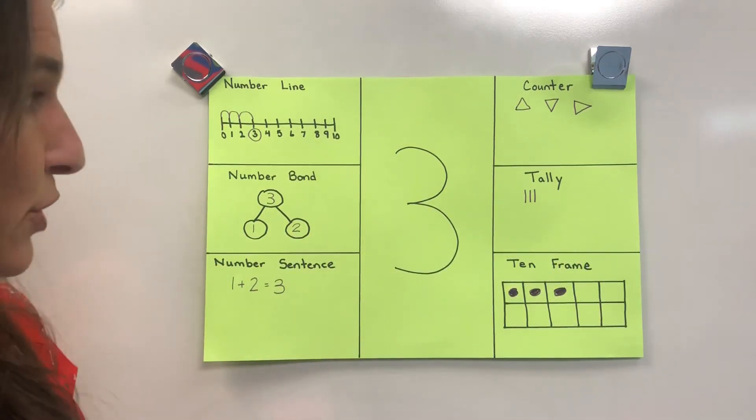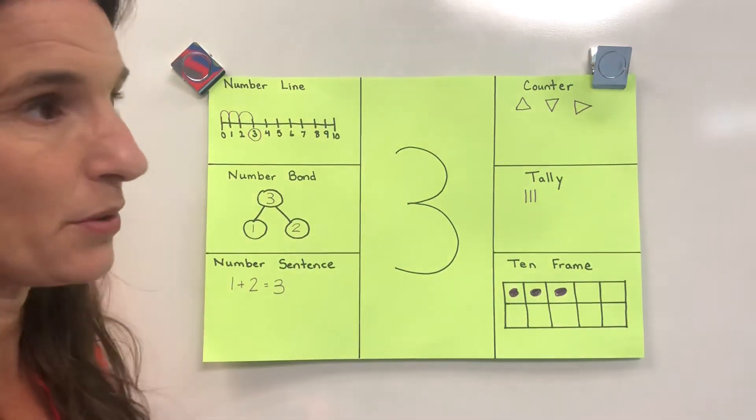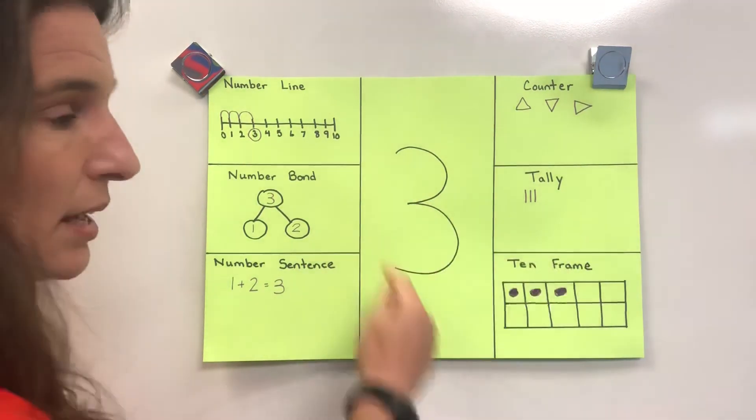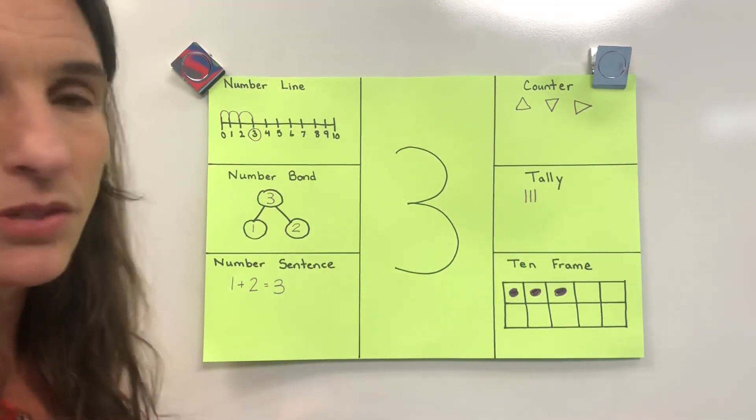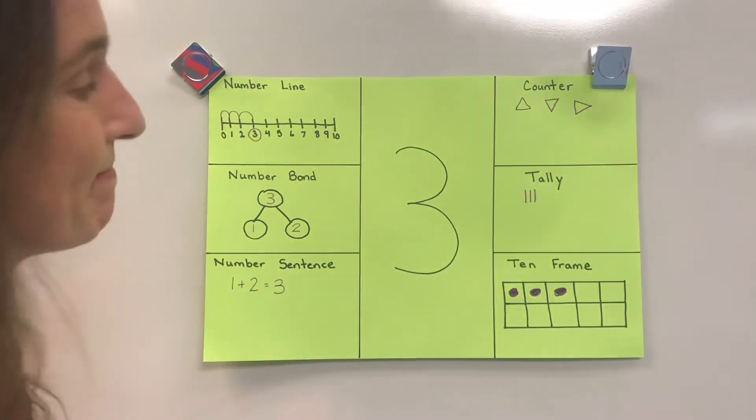Now that I've shown you everything about number three, you know a little bit more about the number three, and you can practice writing it because sometimes that can be tricky. If you make it backwards at first, it's okay. Just erase it and try again. You'll get it eventually. Thanks.